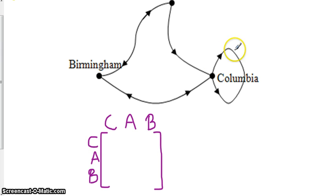Okay, so from Columbia. You see we have this loop, and we have the arrows going both ways. So that means with Columbia, it can come back to itself. So it gets a one. Atlanta, from Columbia, I can't go there. So that one gets a zero. But I can go to Birmingham, because of this arrow right here. So it gets a one.